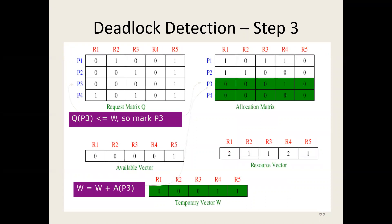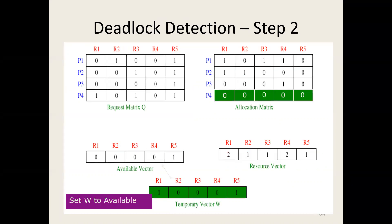In Q, we can see P3 can be satisfied — the request is 0, 0, 0, 1 and that can be satisfied. When P3 can be satisfied, P3 will complete and release what is already allocated, which is 0, 0, 1, 0.